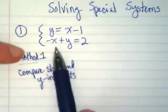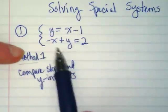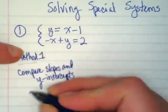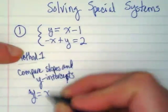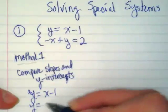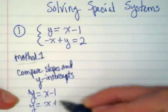And to get the y by itself, what am I going to move in this one? The x is going to be plus x. So I'm going to rewrite these down here as y equals x minus 1. And the second equation is y is equal to x plus 2.